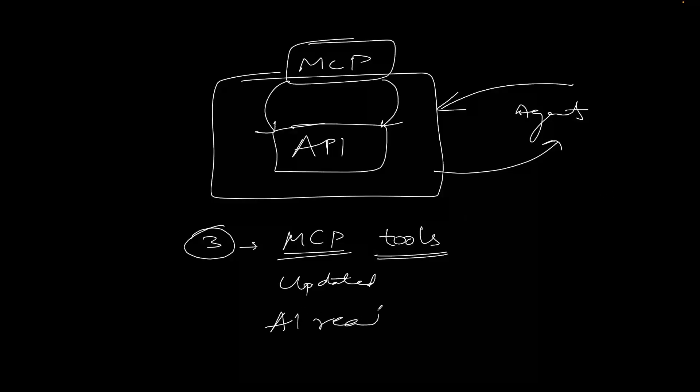MCP is AI-ready. AI agents are available to you through it. As software engineers, we can complete the API and make an MCP. When we develop APIs, we can create an entire ecosystem. Software engineers need to create new technology, stay updated, be adaptive, and upskill. We should definitely be using MCP Servers.